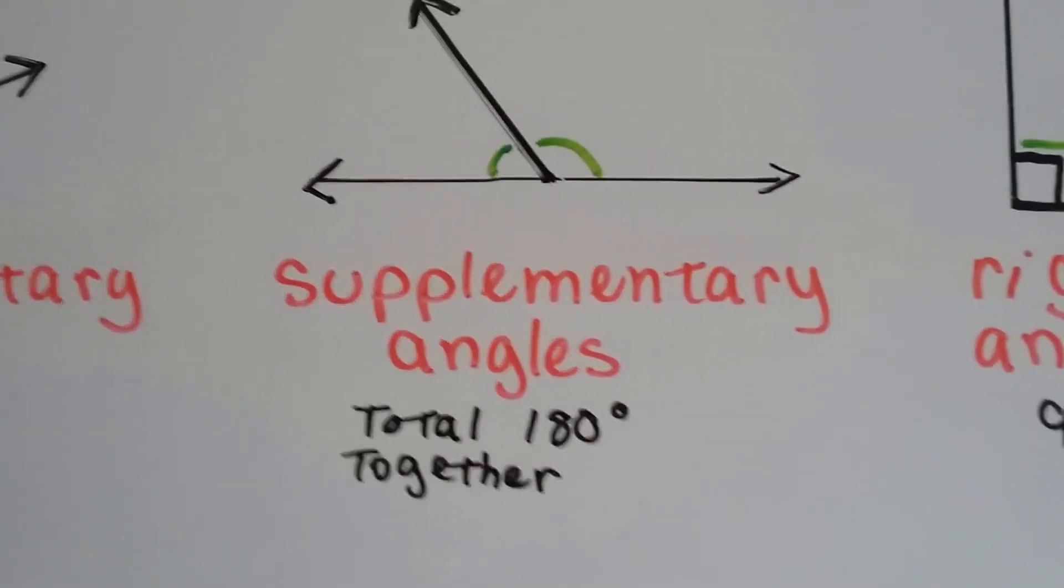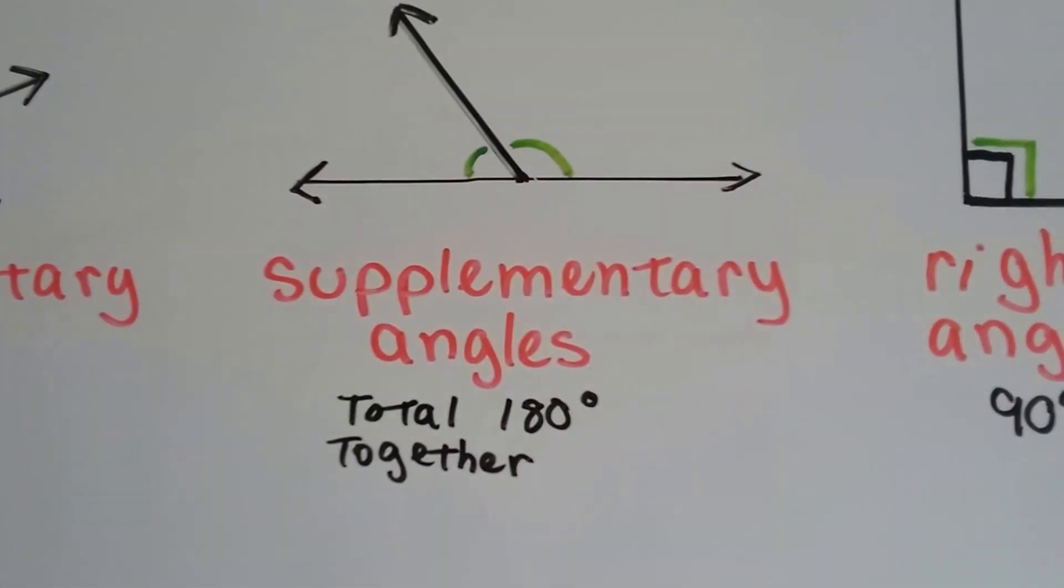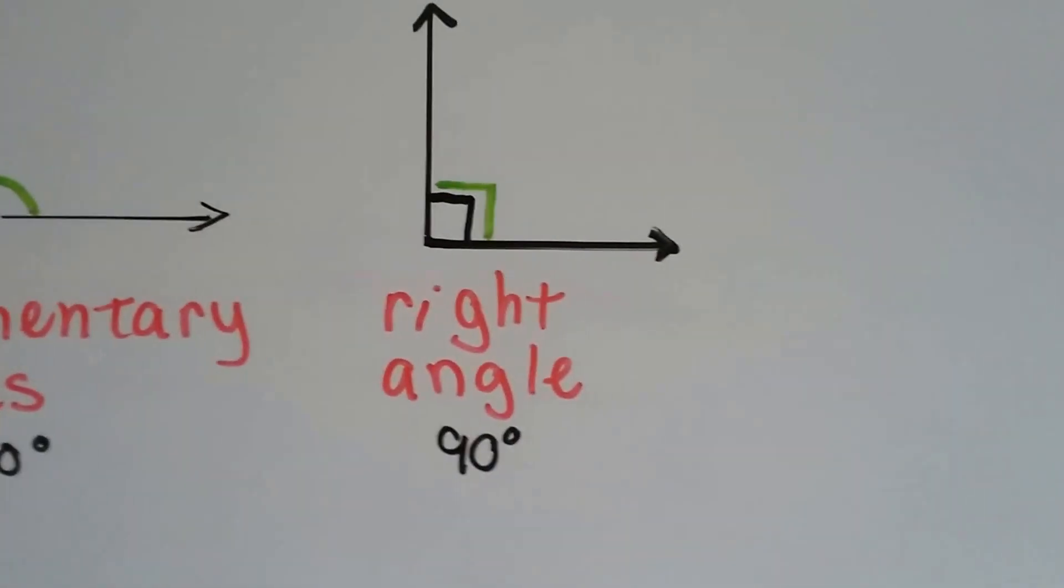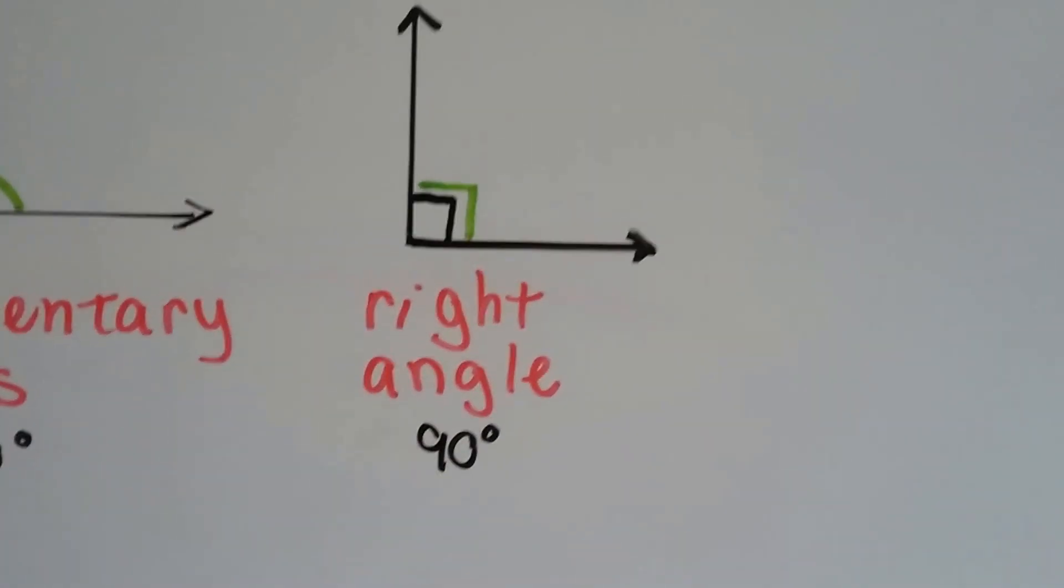Supplementary angles total 180 degrees together, so this angle and this angle would total 180 degrees. And then, of course, we have our right angle, and the little box tells us it's a right angle, and it's 90 degrees.